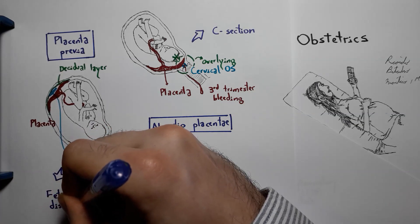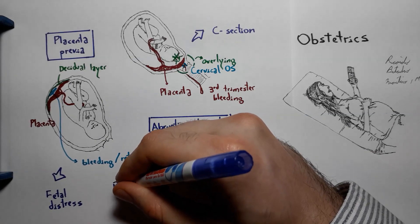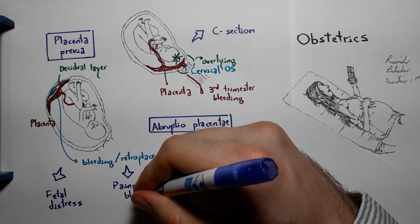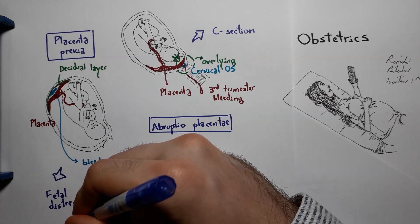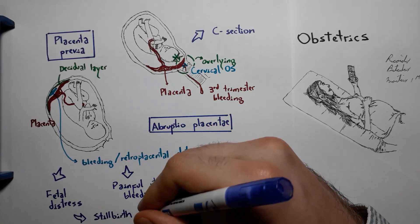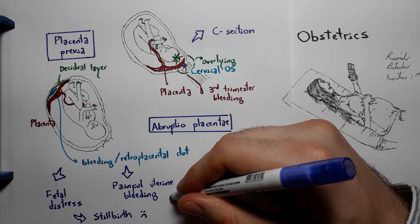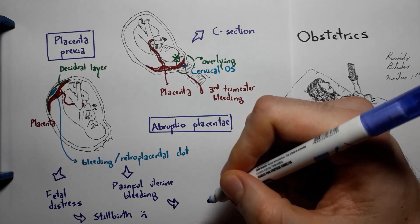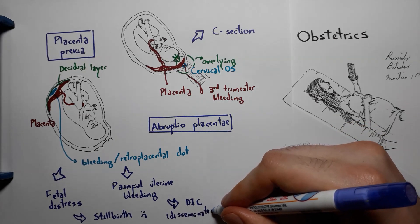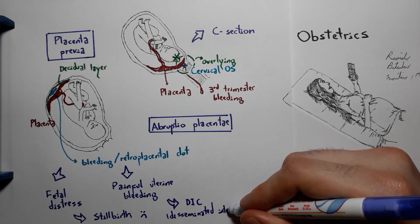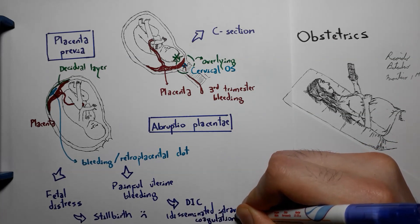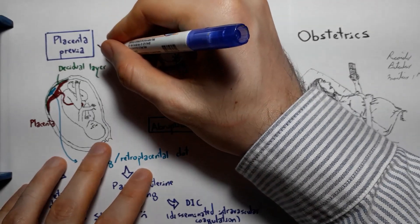Because of the loss of placental area, we can have fetal distress developing, as well as painful uterine bleeding in the mother if the blood manages to reach the cervical os and drain into the vagina. Since it progressively compromises the placenta, it's a possible cause of stillbirth. In the presence of this large retroplacental hematoma or clot, the mother can also develop DIC, or disseminated intravascular coagulation.